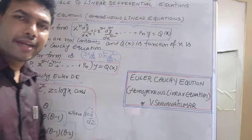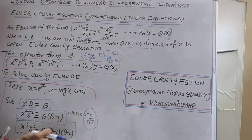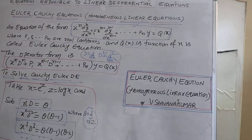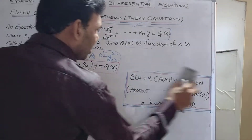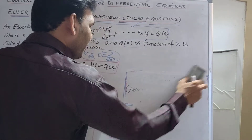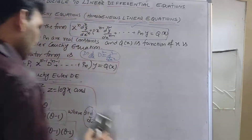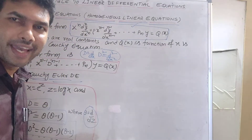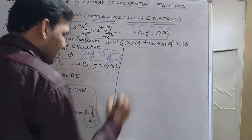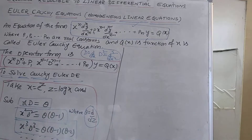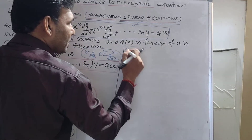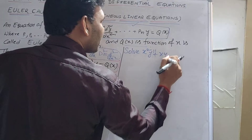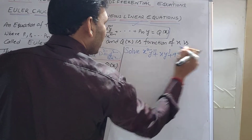With this information, you can easily solve any Cauchy-Euler differential equation. Here is a simple Cauchy-Euler equation — a short answer question from a previous external exam. The problem is: Solve x²y'' + xy' + 9y = 0.